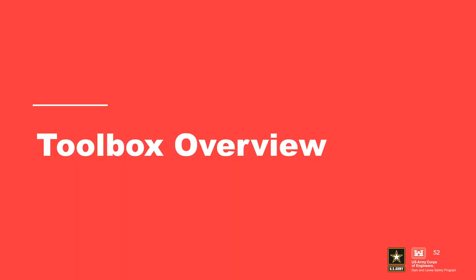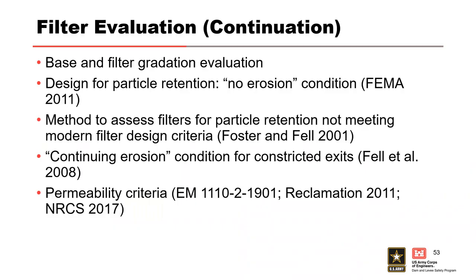To wrap up the presentation, we'll briefly list the worksheets available for use in the RMC Filter Evaluation Continuation Toolbox to assist in the evaluation of existing filters. The first worksheet performs a particle size analysis of the base and filter gradations and determines if regrading of the base soil is necessary. The second worksheet evaluates the existing filter for particle retention based on the no erosion condition, and the third worksheet follows the Foster and Fell methodology to assess the existing filter when it does not satisfy the no erosion criterion. The fourth worksheet assesses the continuing erosion condition for constricted or non-erodible exits, and the fifth worksheet assesses the existing filter with regard to permeability criteria from USACE, Reclamation, and NRCS.